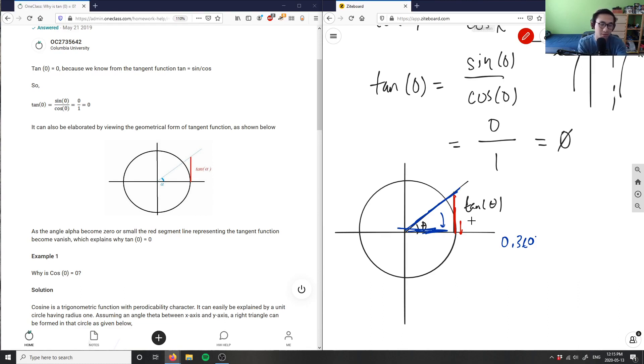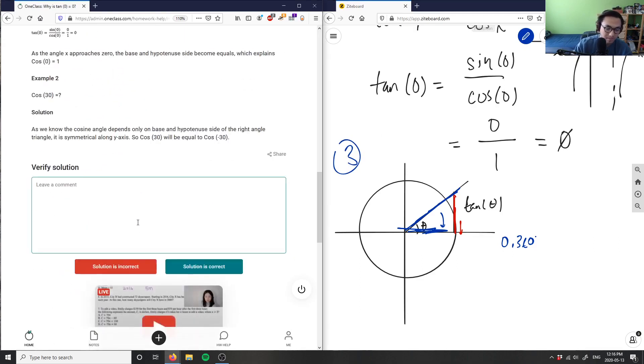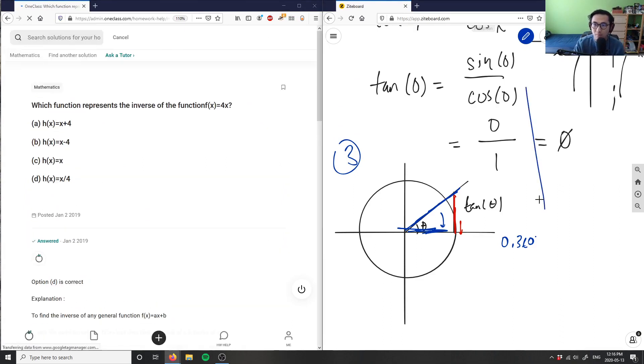So again, this solution is correct. And we actually used three different ways to prove that tangent zero, tangent zero equals zero here. This solution here is correct.